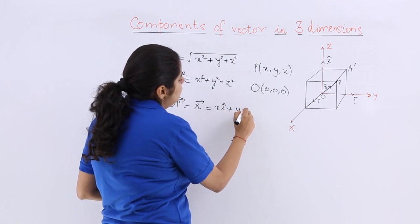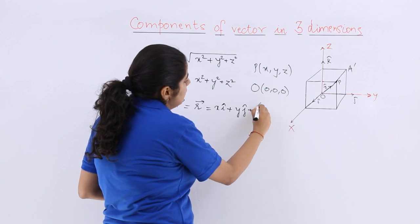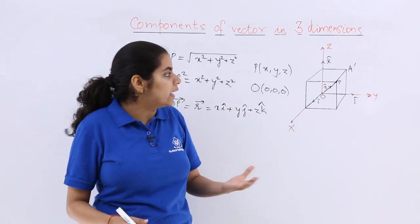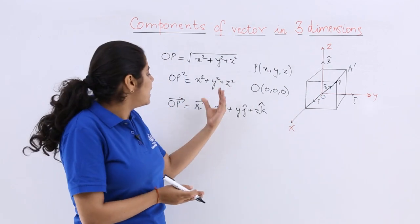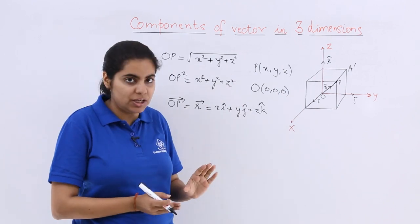So whenever you have a point in space whose coordinates are x, y, z, the magnitude and the vector actually would be having certain specifications.